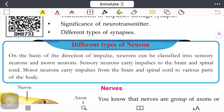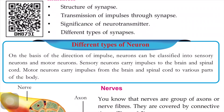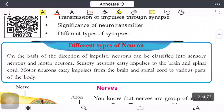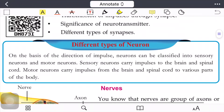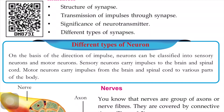On the basis of the direction of impulses, neurons can be classified into sensory neurons and motor neurons. Sensory neurons carry impulses from body parts to the brain and spinal cord. Motor neurons carry impulses from the brain and spinal cord to various body parts.